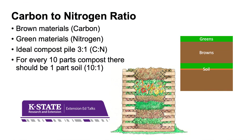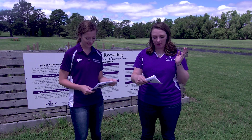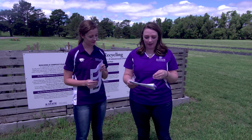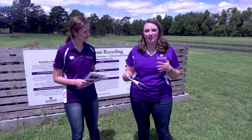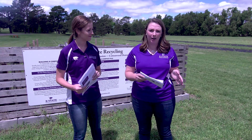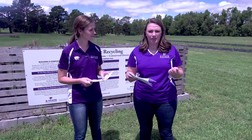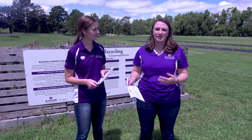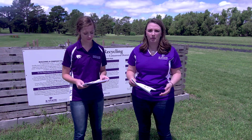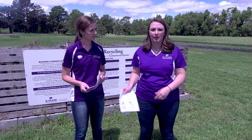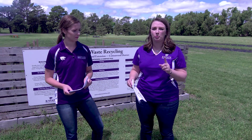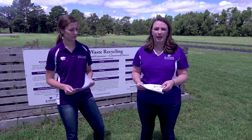The carbon to nitrogen ratio is important — again, browns are carbon and greens are nitrogen. You want a three-to-one ratio: three parts brown to one part green. Also keep in mind that you should add some soil in small increments — for every ten parts of total compost, adding one part of soil is helpful.